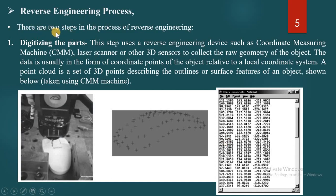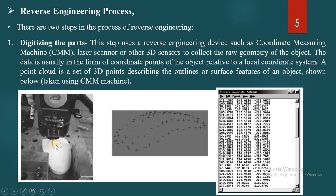Next, the Reverse Engineering Process. This process is divided into two steps. Number one: Digitizing the part. If you have an existing part and want to collect its dimensions digitally, the first step is digitization. Devices such as a Coordinate Measurement Machine, laser scanners, or 3D scanners are used to collect the raw geometry of the object. The Coordinate Measurement Machine takes the dimensions of each and every part, and the data is usually collected in the form of coordinate points — x, y, and z coordinates are saved.